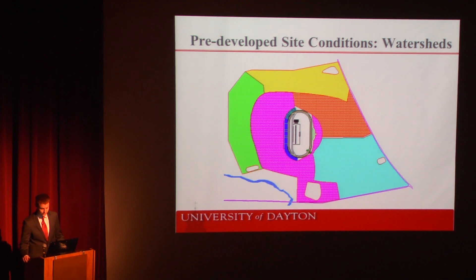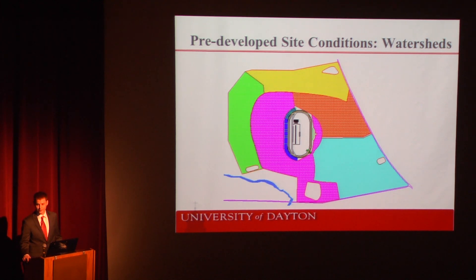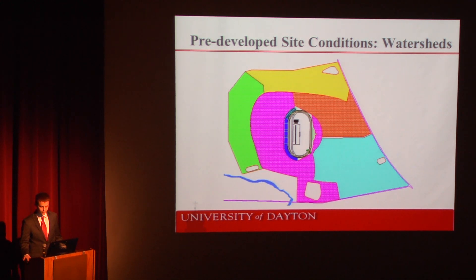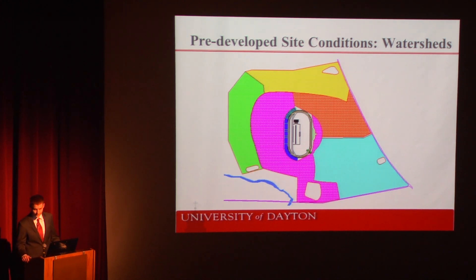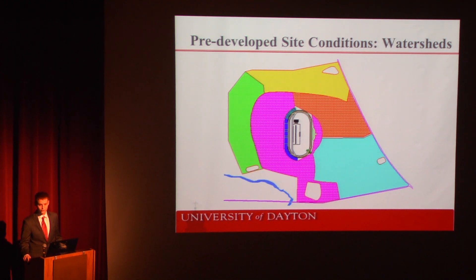Our total site facility was found to have an acreage of 805. Because of this large size, we decided to break it up into six different watershed areas. The yellow and green colors represent the watersheds for the north and west camping areas. The orange, pink, and light blue areas represent the watershed areas covered by various parking lots throughout the site. In the center of the map is the stadium watershed.